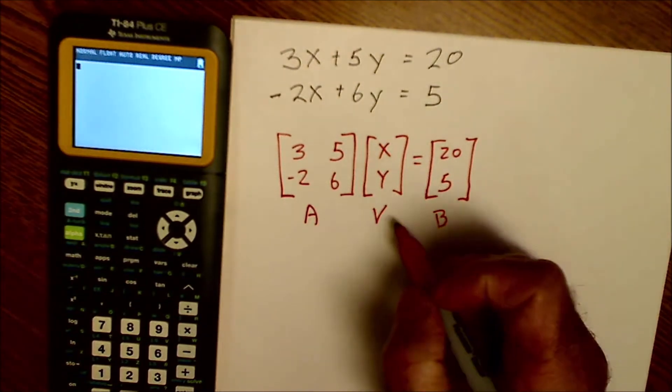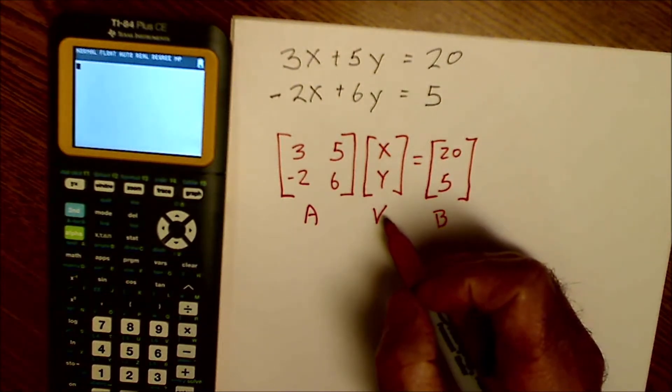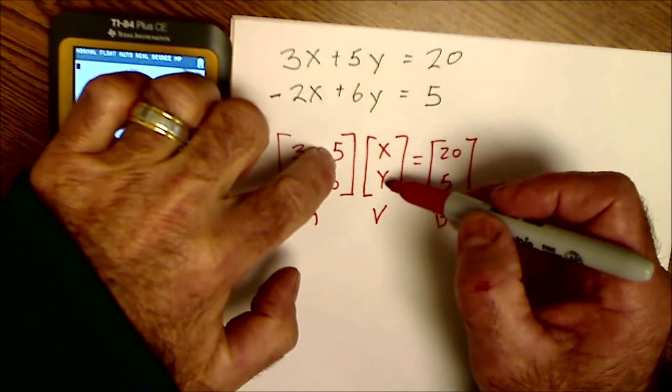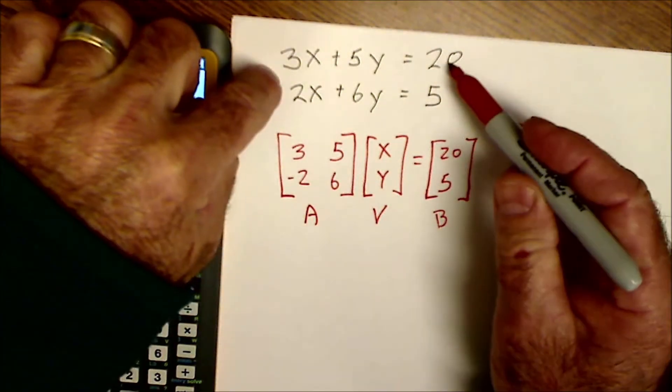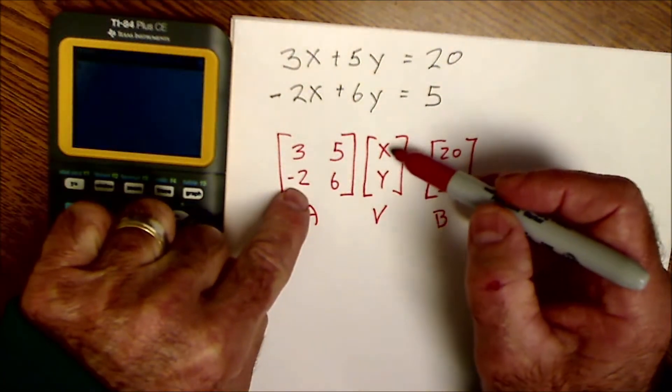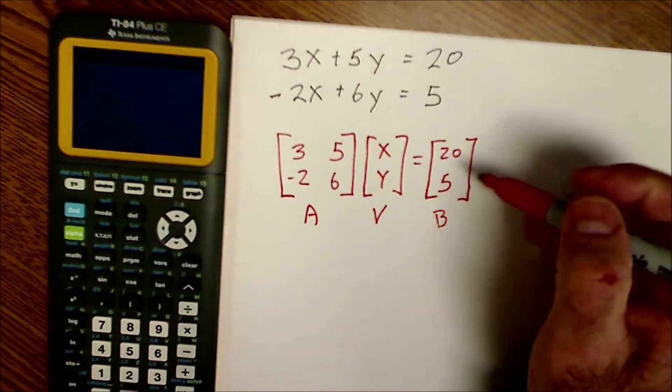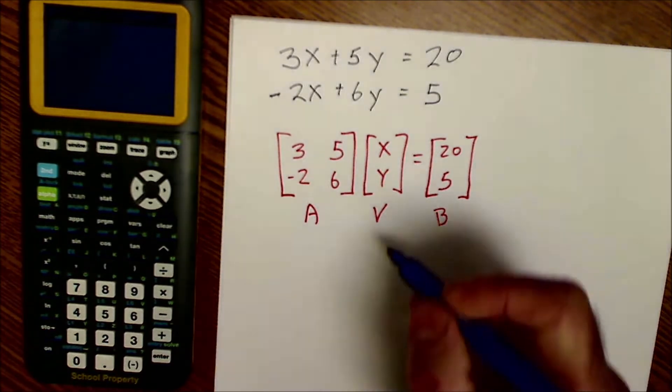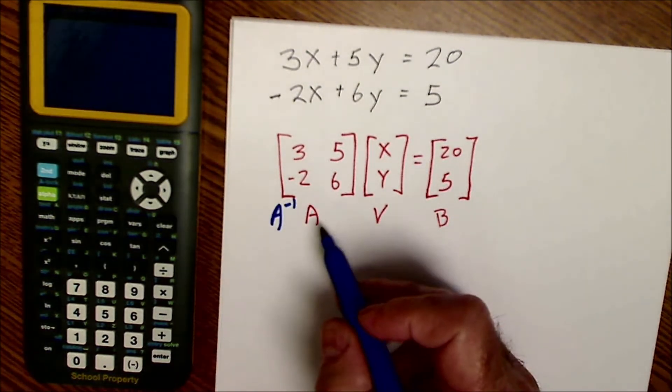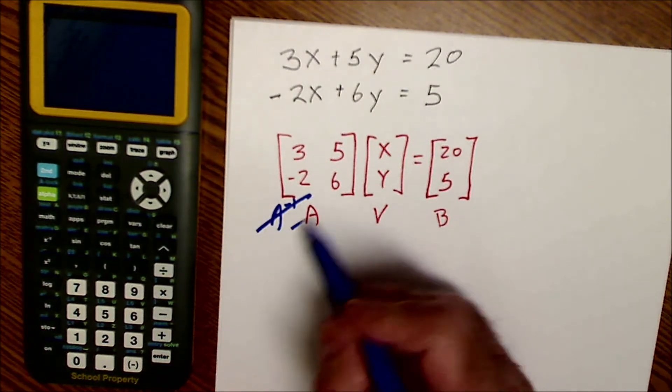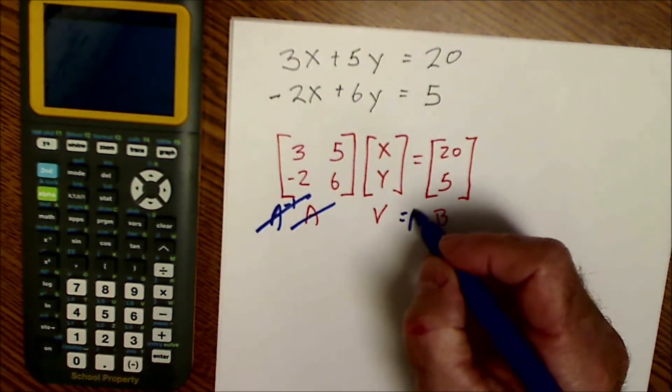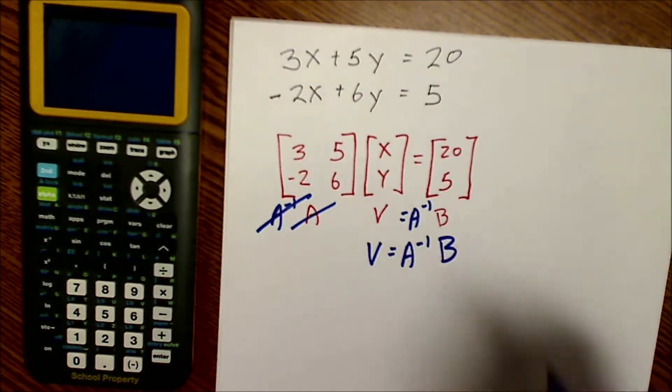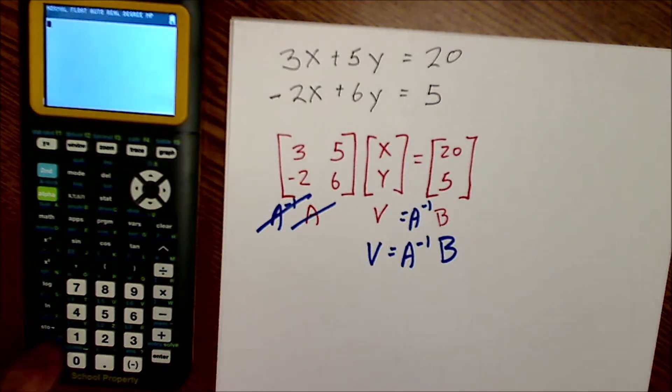And you could check that because I have a two by two times a two by one. That would equal a two by one. And then if I multiply these together, I'd have 3x plus 5y would equal 20, and that's my equation. And then down here, negative 2x plus 6y would equal 5. So I have A times v equals B. If I wanted to get my variables by itself, I could just take the inverse of A times A, that would cancel. I do that to the left side of the equation, I also do it to the right side. So my variable matrix will be the inverse of A times B.